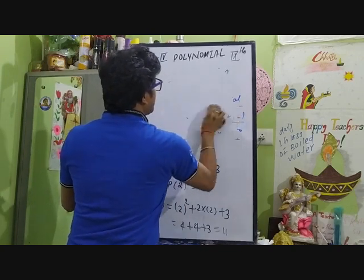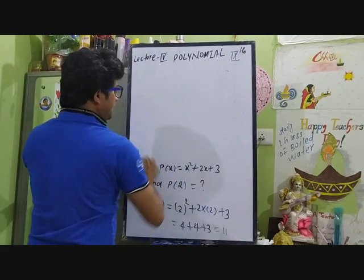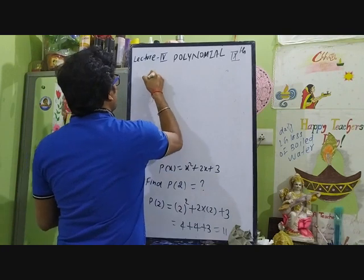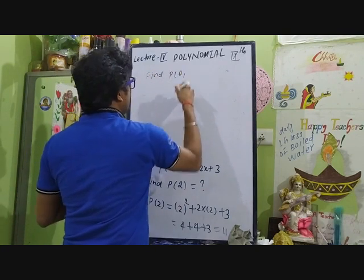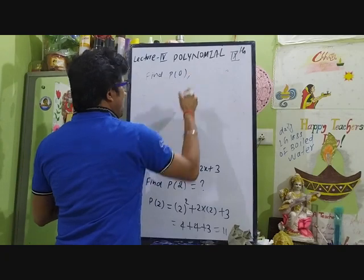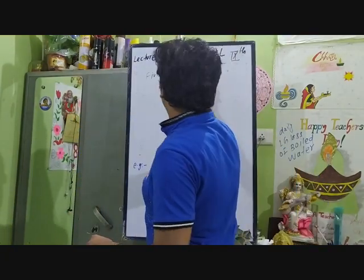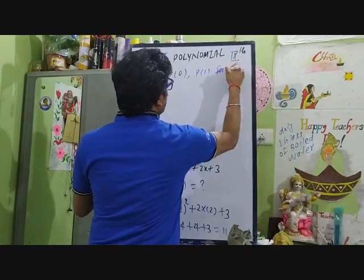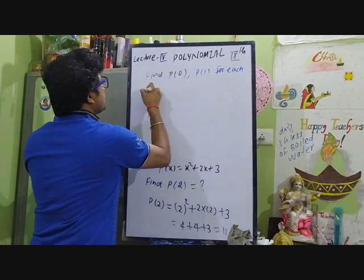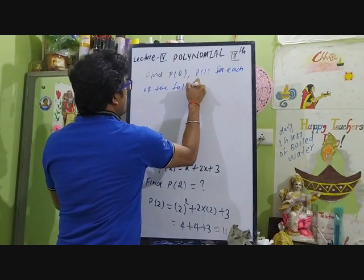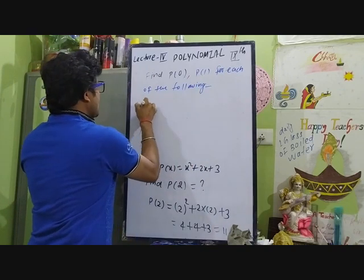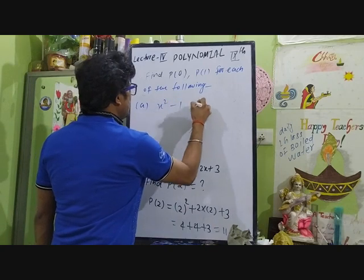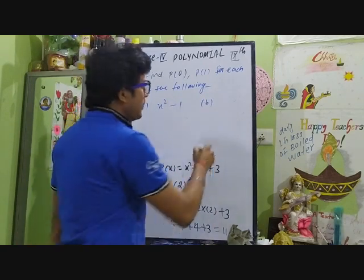The question is: find p(0) and p(1) for each of the following polynomials: (a) x² - 1, and (b) x^100 - 1.